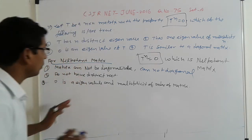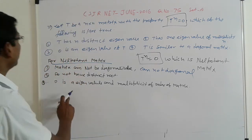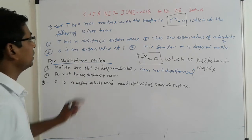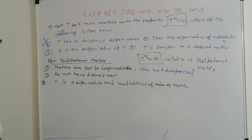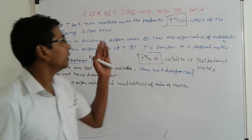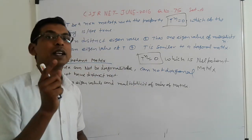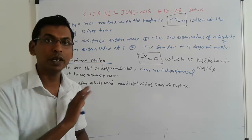Now come to the point, which option goes to this. First, T has n distinct eigenvalues. Here, do not have distinct eigenvalue, that is cancel, because only when T is nilpotent matrix, one eigenvalue is 0, no any others.